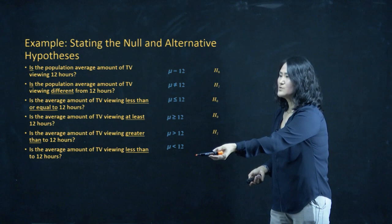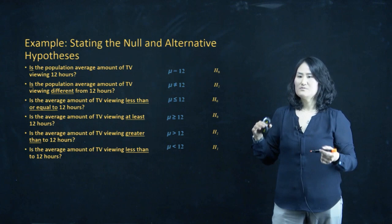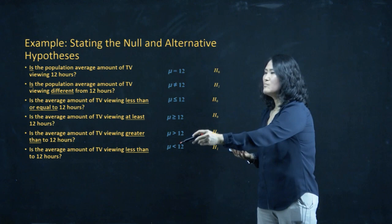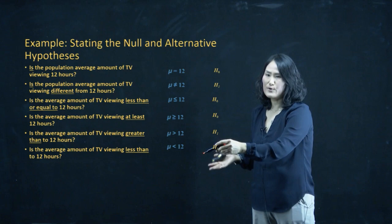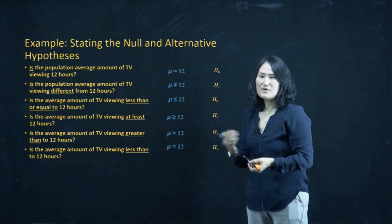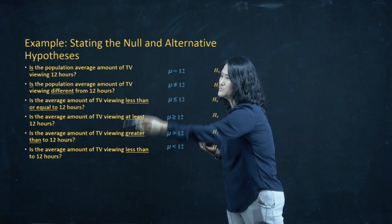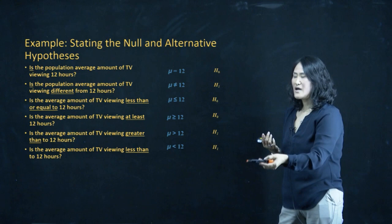Those are the different examples of mathematically writing a hypothesis. The number — the population mu — comes from your claim, so that number changes. But the front part — mu equals, does not equal, greater than, less than — you have to figure out by reading the claim. You have to read the question, find the wording, convert it to mathematical form, and identify whether it is H0 or H1.